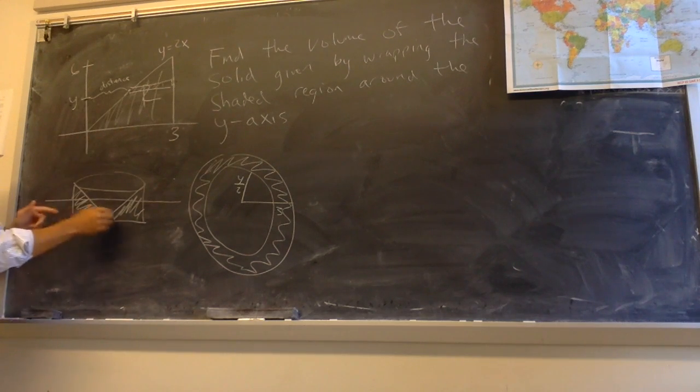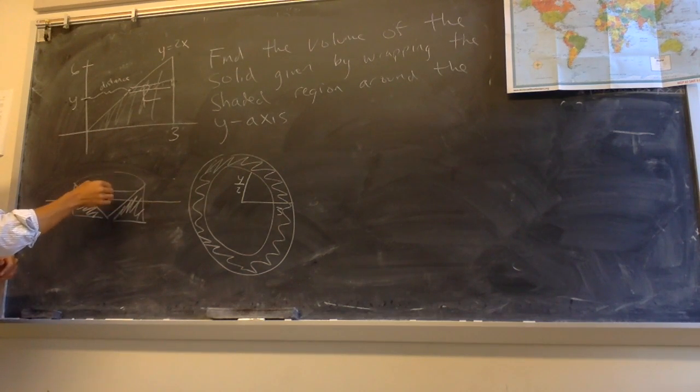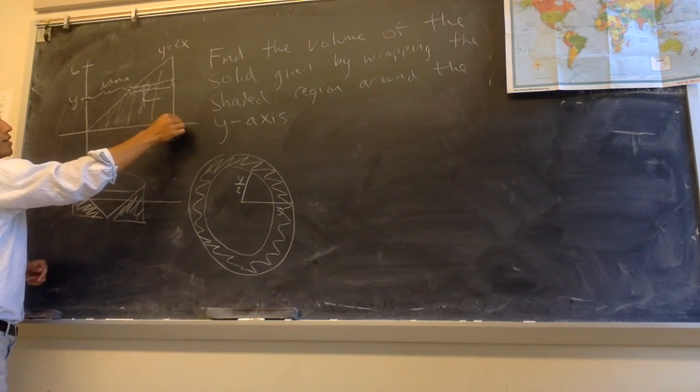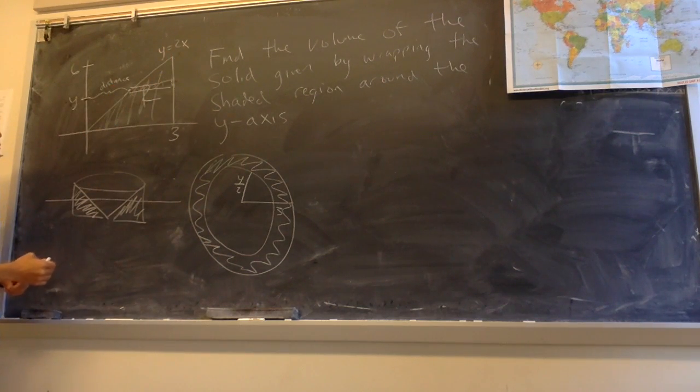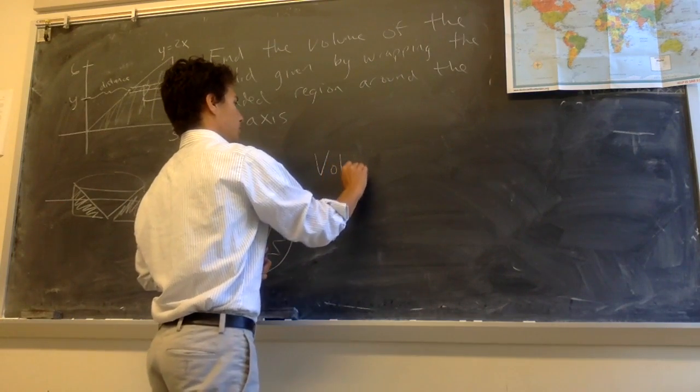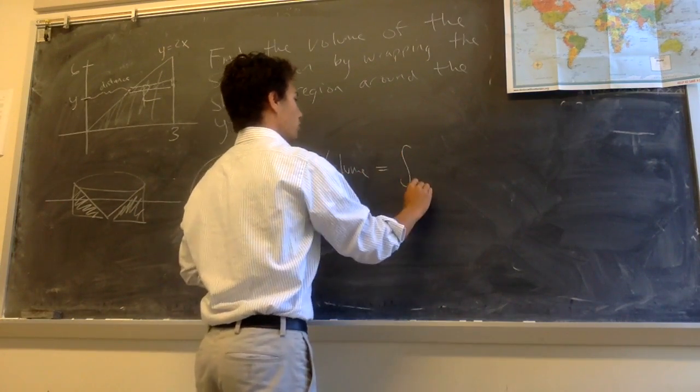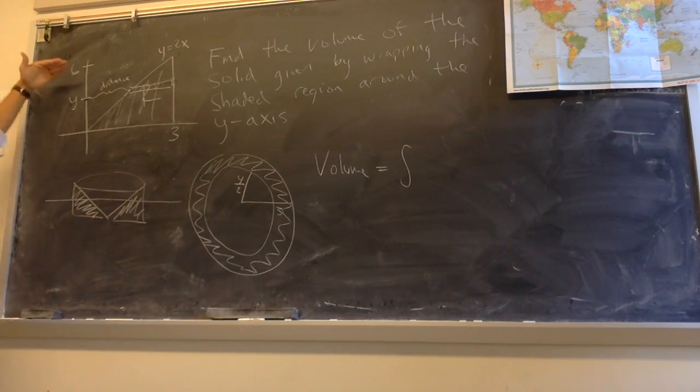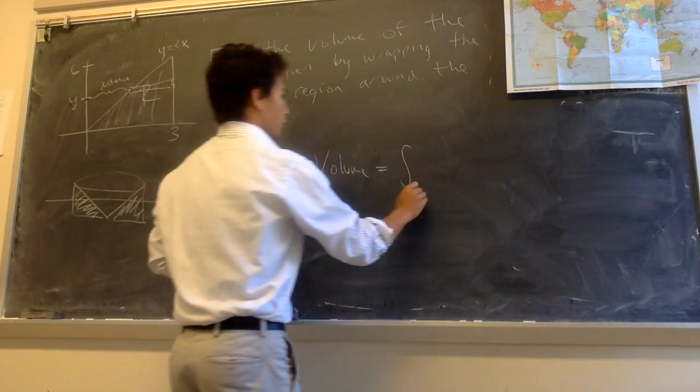And since I'm adding up all of these cross-sections that I'm taking horizontally, what I'm doing is I'm adding up all these, so y is changing. So I'm going to integrate with respect to y. In the end the volume is given by the integral. And where is y moving between? It's starting at 0 and going up to 6. So it's the integral from 0 to 6.